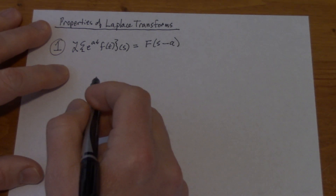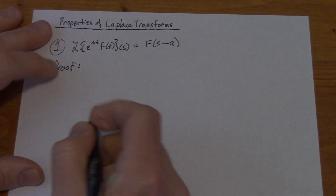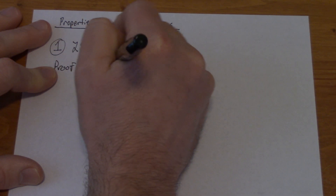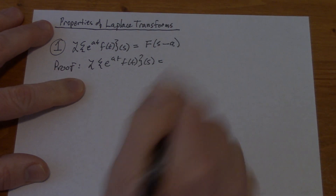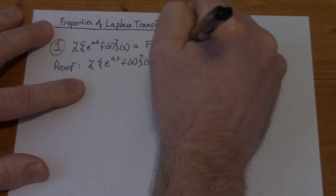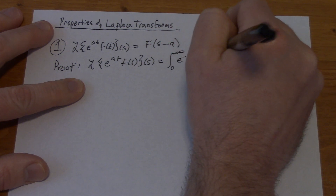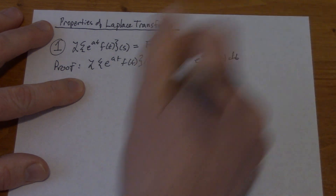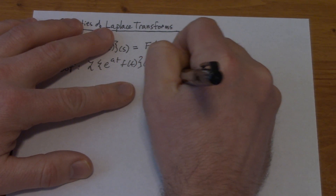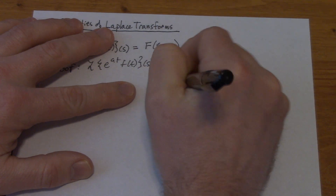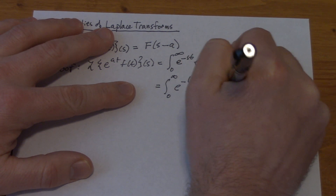We actually already talked about this, so it's got a really short proof. If I look at the Laplace transform of e to the at f of t with respect to s, that's the integral from zero to infinity of e to the minus st times e to the at f of t dt. This is just a straight substitution, so I can rearrange this to look like e to the minus s minus a times t, f of t dt.